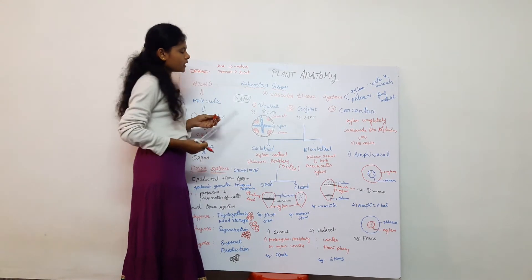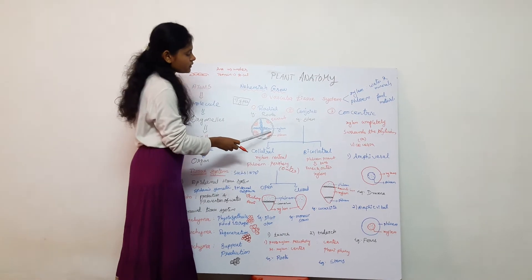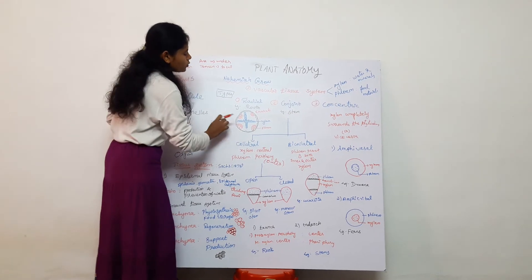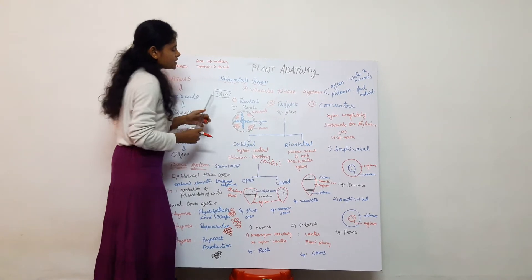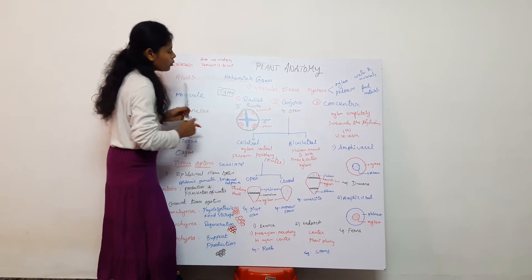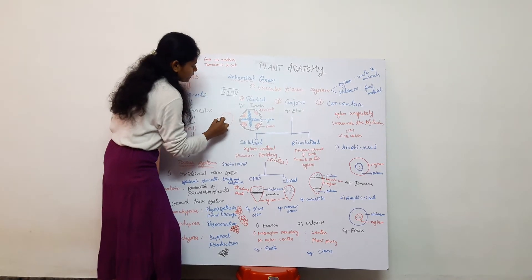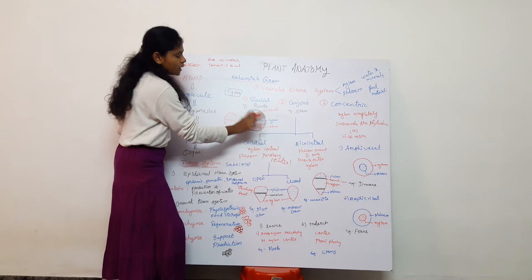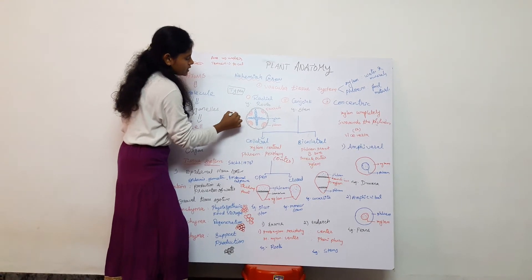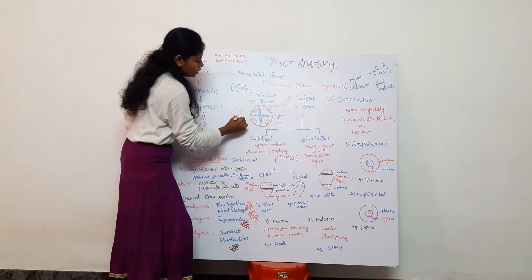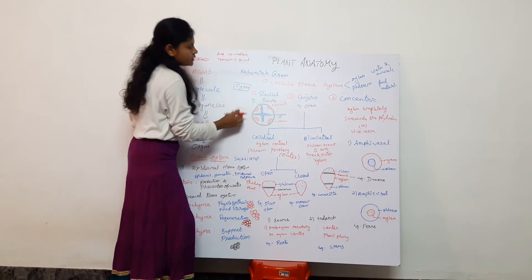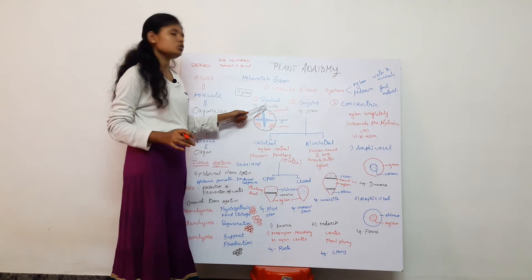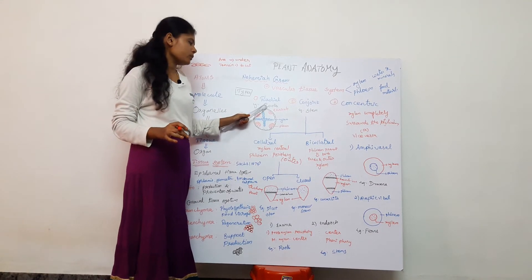Radial vascular bundles: xylem and phloem are arranged alternately, meaning they are on different radii. Xylem and phloem are in different radii and are arranged in alternating positions. This arrangement is found in roots.